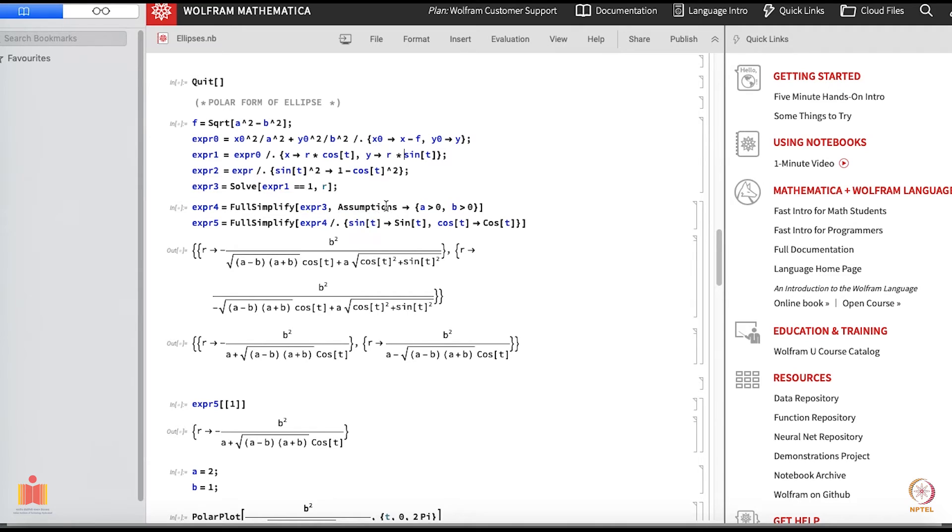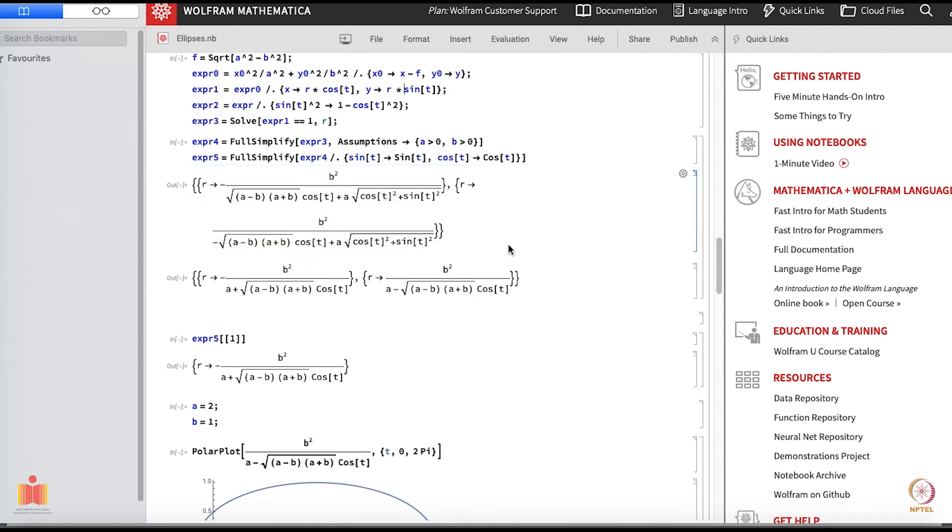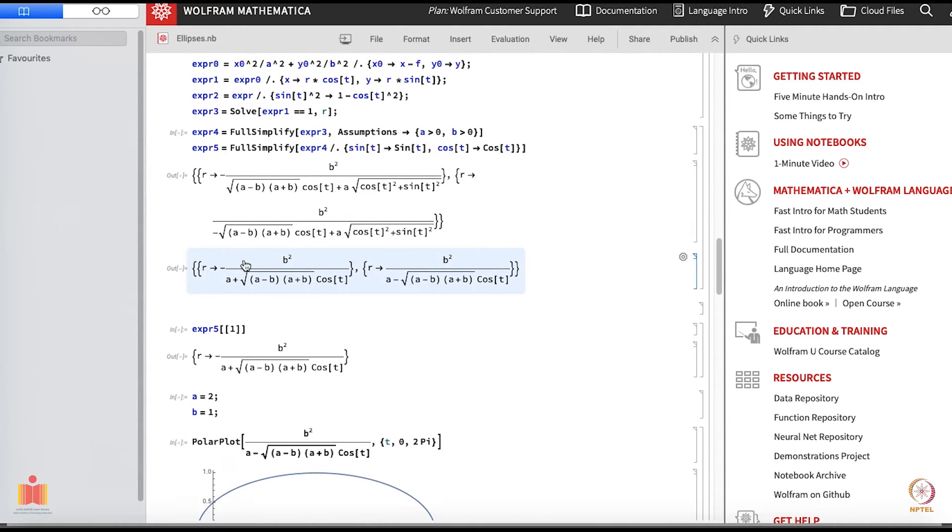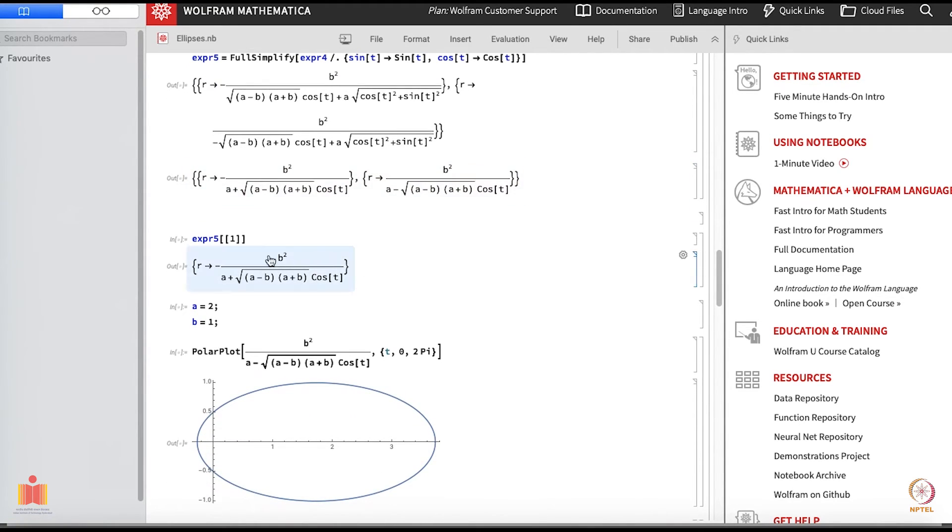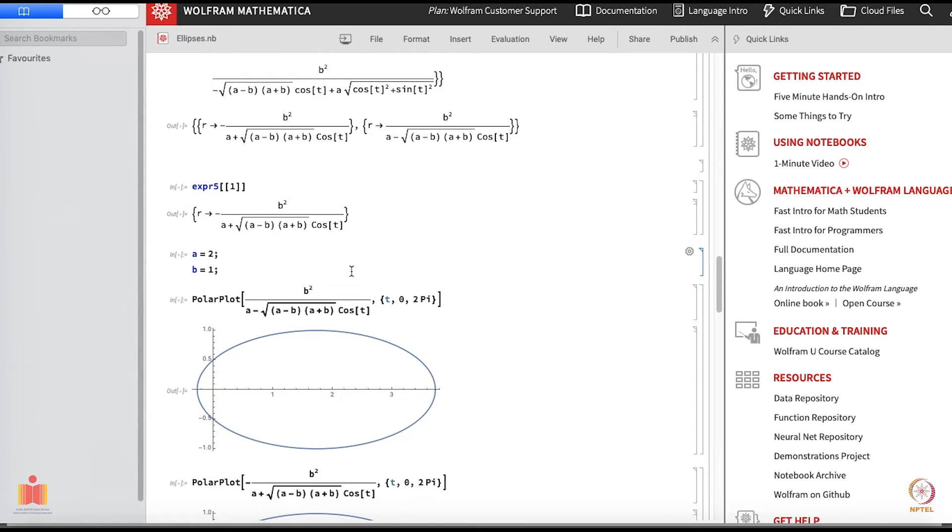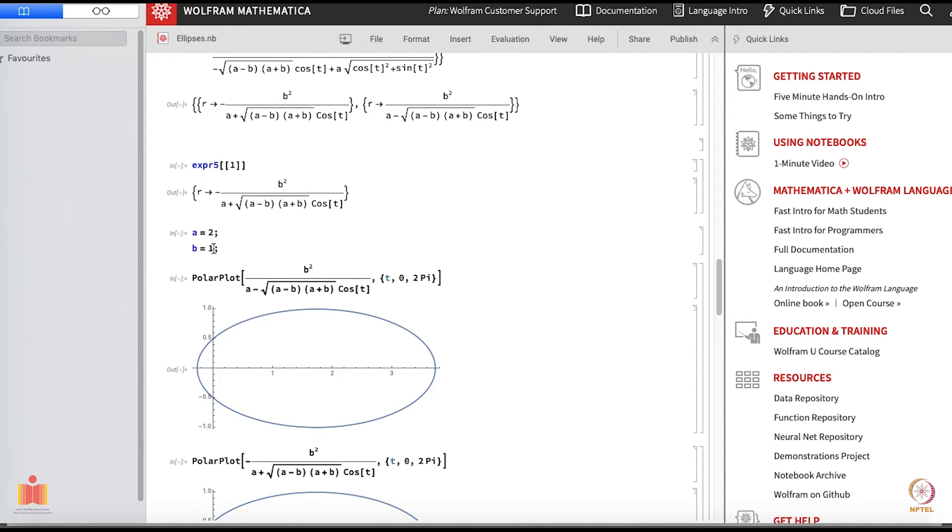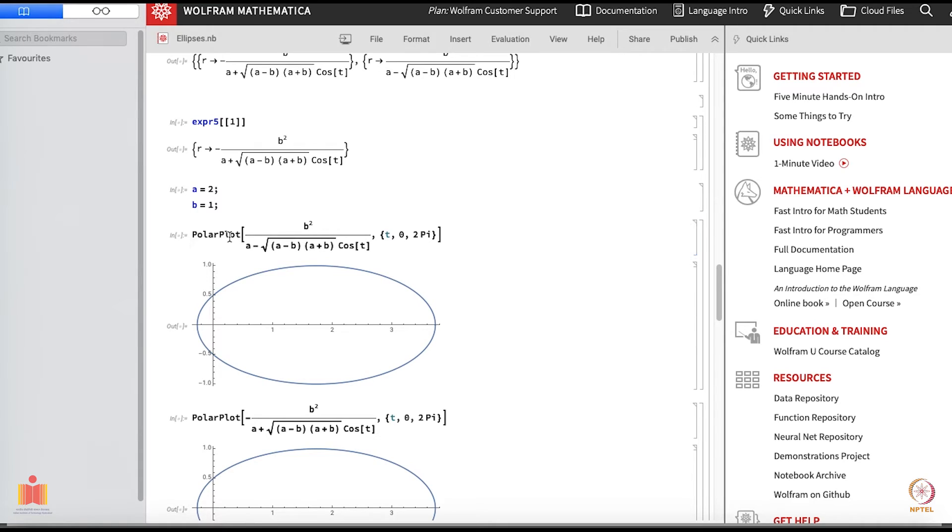I have solved this and simplified a bit, and after simplifying I get the following result. It gives me two results: r equal to minus b square over a plus this thing times cos t, and r equal to b square over a minus this thing times cos t. I have just extracted out the first piece. I am putting a equal to 2, b equal to 1 - we wanted to choose b to be smaller than a that is why I have chosen these numbers - and I do a polar plot which I was talking last time. I have just taken this piece and put in here and I vary theta from 0 to 2 pi and that is what you get.